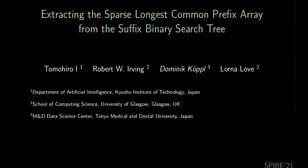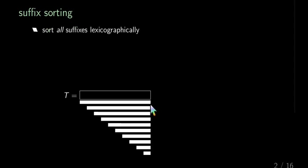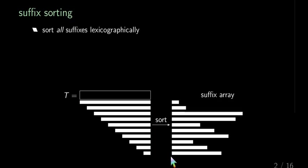This talk is about sparse suffix sorting, so let's recap what suffix sorting is. Given the text T, we collect all its suffixes and sort the suffixes lexicographically. If we represent each suffix by its starting position in the text and list these starting positions sorted with respect to the lexicographic order of its respective suffix in an array, we get the suffix array.